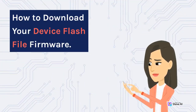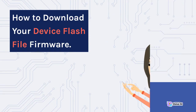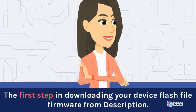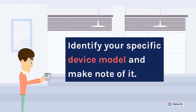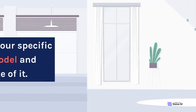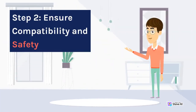How to download your device flash file firmware. The first step in downloading your device flash file firmware is from the description. Identify your specific device model and make note of it. Step 2: ensure compatibility and safety.